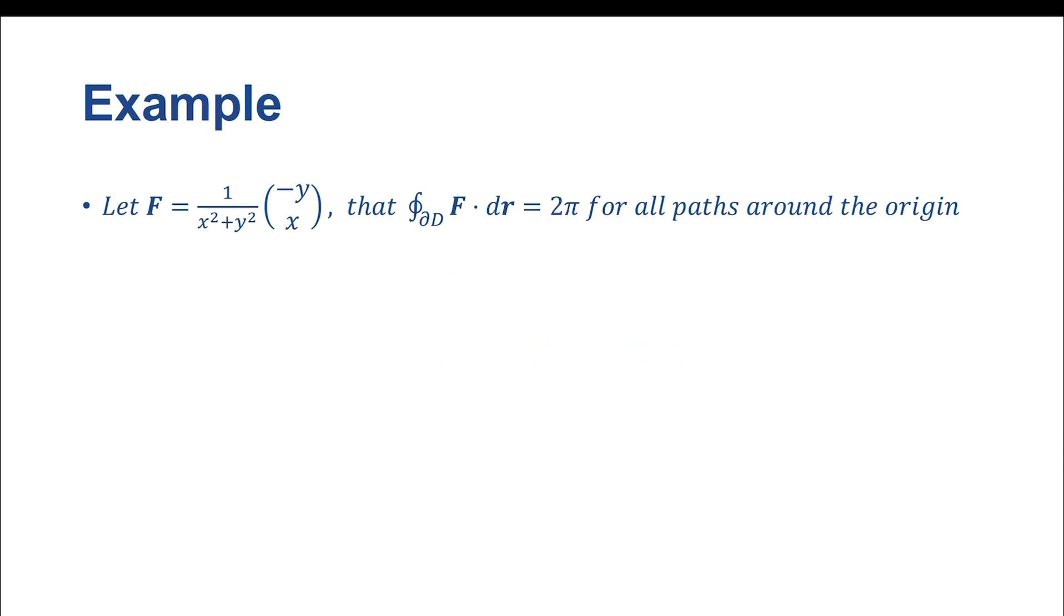For this example, I would like to consider some vector function F, such that F equals 1 over (x² + y²) times (-y, x). I would like us to show, or prove really, that any closed integral over a boundary of a domain of F·dr is equal to 2π for all paths that cross the origin for this given vector function.